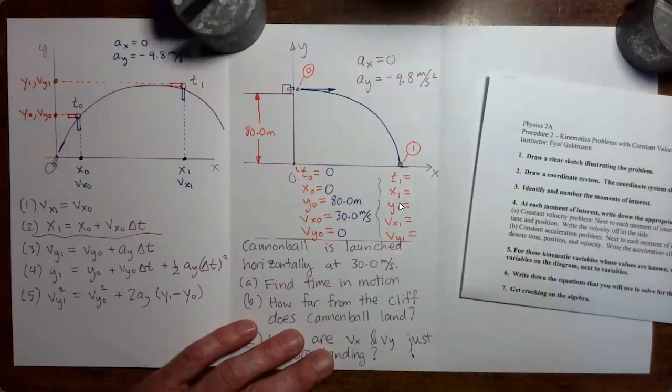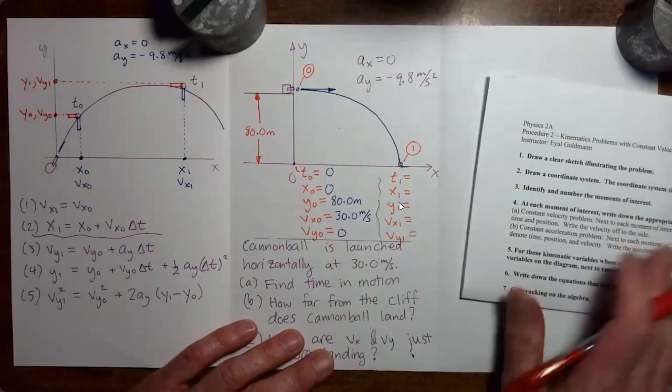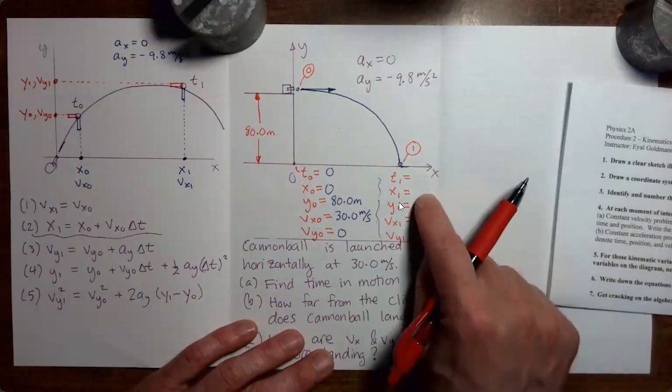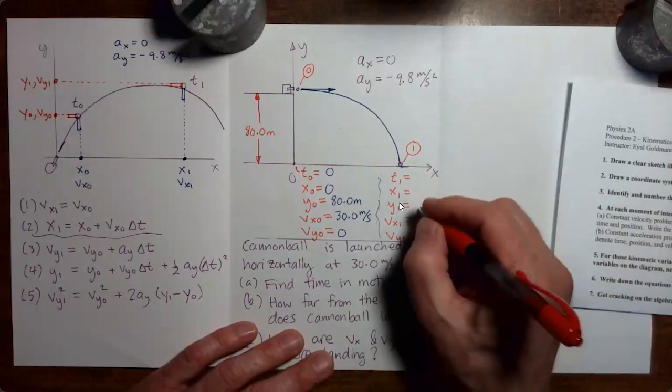Now for moment one, we don't know the time. We don't know the x coordinate. We know that the y coordinate is zero.